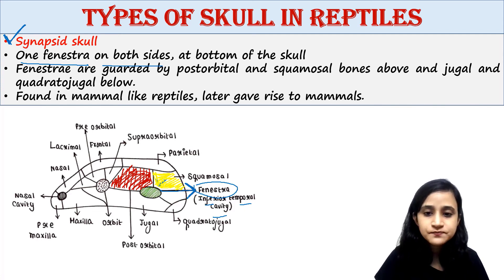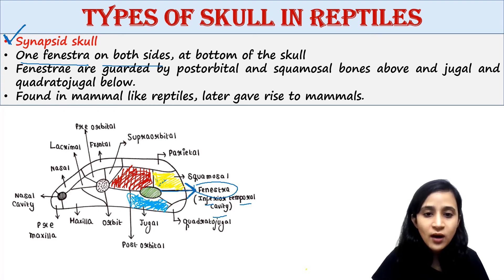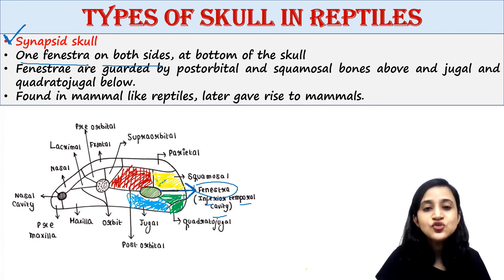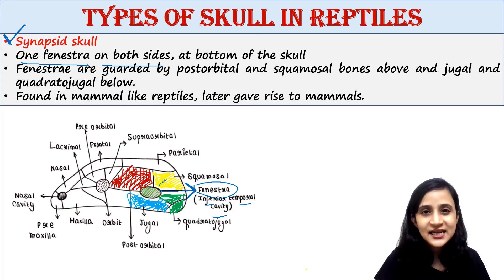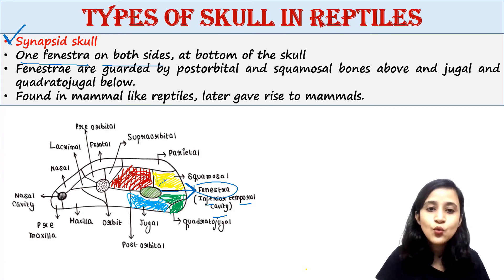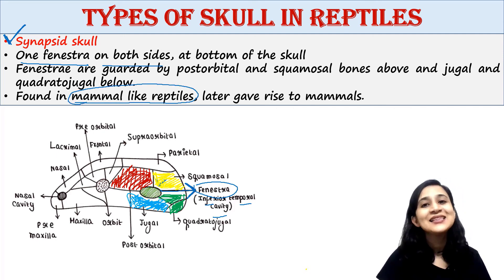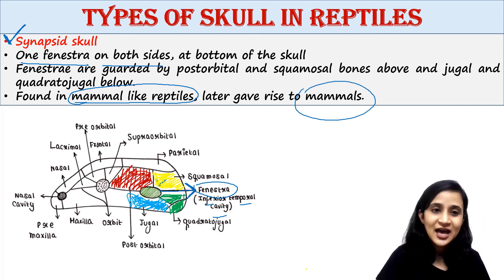The inferior temporal cavity is guarded above by post-orbital and squamosal bones, and below by jugal and quadratojugal bones. Synapsid skull was found in mammal-like reptiles, and these reptiles later gave rise to mammals.